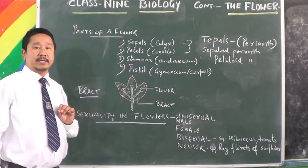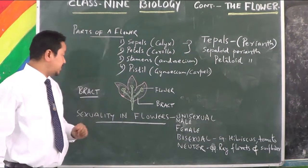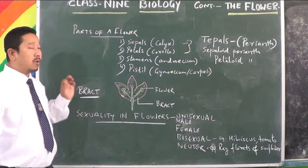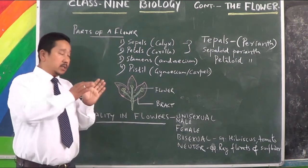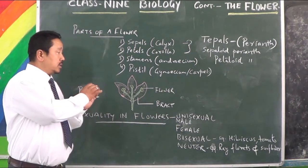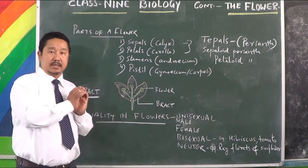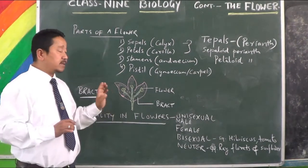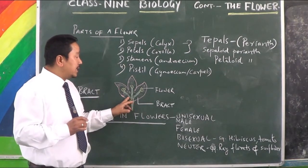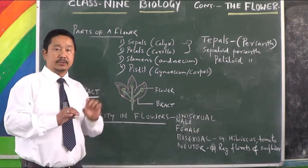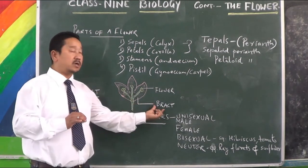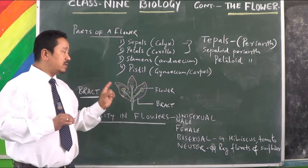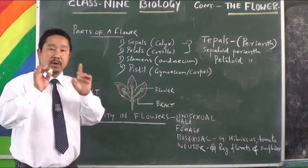Another word you find associated with flowers is bract. Bract is a term given to that structure of the plant when a flower arises from the axil of a leaf-like structure of a plant. That structure is called bract. This can be clearly seen in a kind of plant called Bougainvillea.